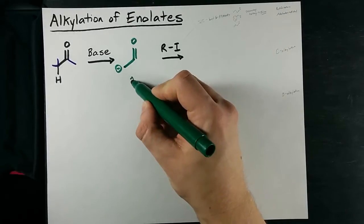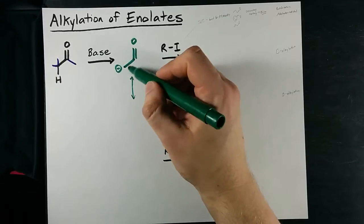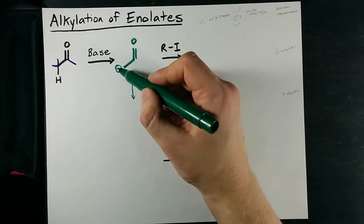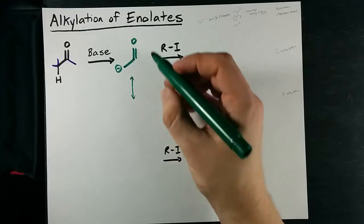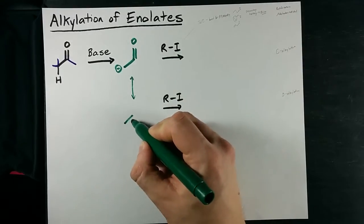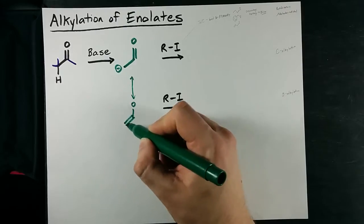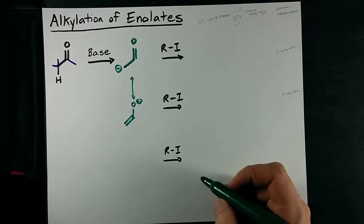Now what's significant about that is that I have electron delocalization here. I can get some of the electrons. I could push those electrons into the double bond and push these electrons from this pi bond onto the oxygen, and what I end up with is a double bonded—well, two carbons double bonded to each other—and this oxygen has a minus charge on it.